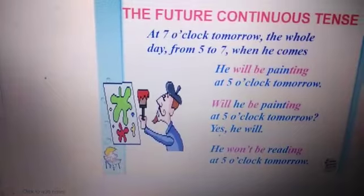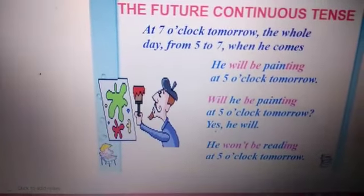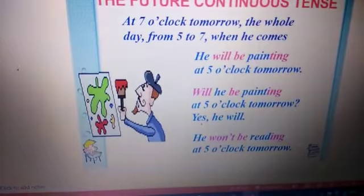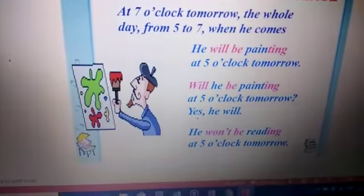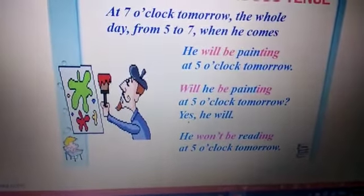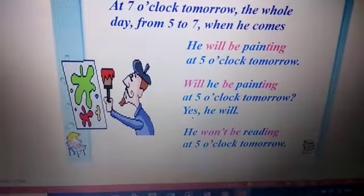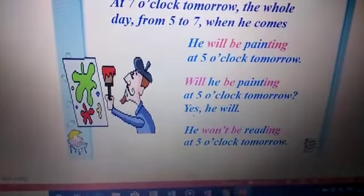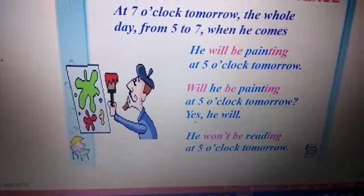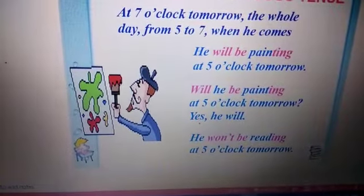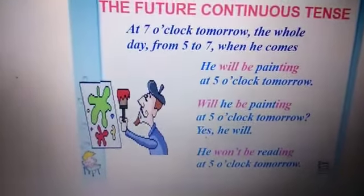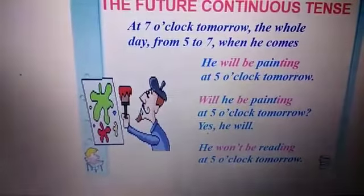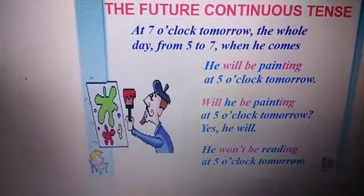An interrogative sentence: 'Will he be painting at five o'clock tomorrow?' Yes, he will. A negative sentence: 'He won't be reading at five o'clock tomorrow.' So today in the English class we did the present continuous tense, past continuous tense, and future continuous tense.